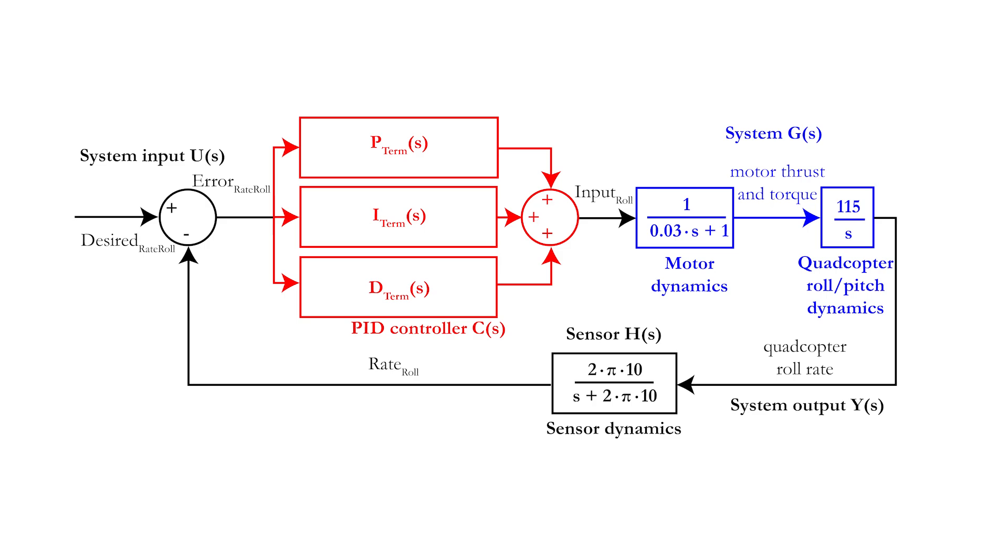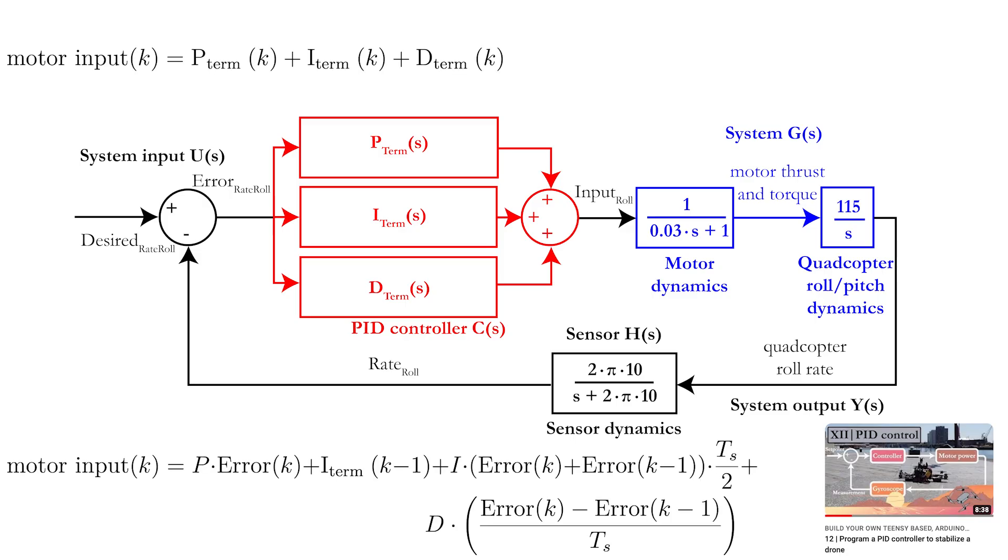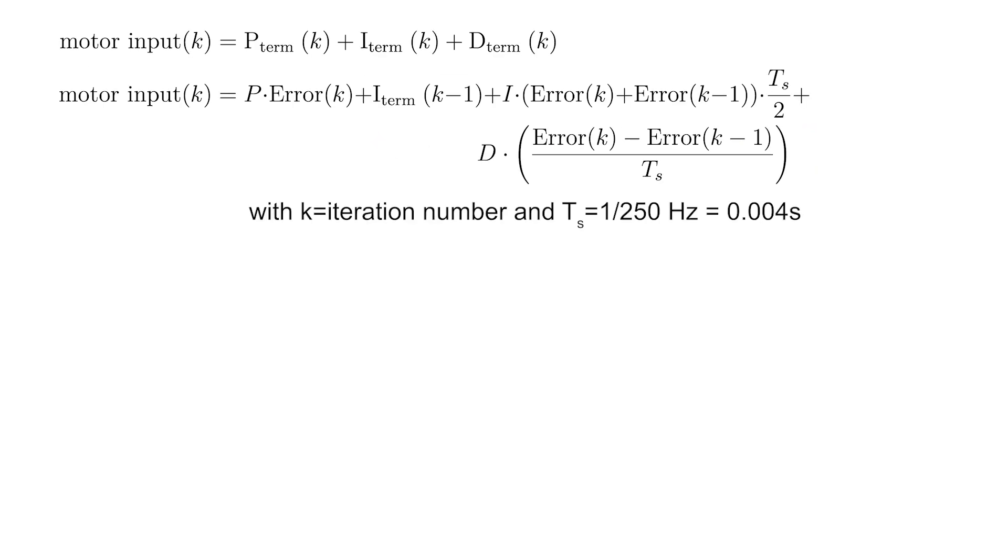The controller consists of three different terms, for which you will need three different transfer functions. In part 12 of the first video series, we developed the equation that describes a PID controller in the discrete time domain. Remember that k in this equation represents the iteration number, and Ts is the iteration length.